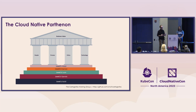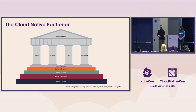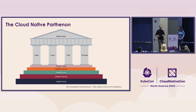If we imagine ourselves walking up those steps for our Acropolis, each step represents where we are within our cloud-native journey. Each of those pillars is one of those key areas — people, process, policy, and technology — that we will be leveling up in, ideally at the same time.